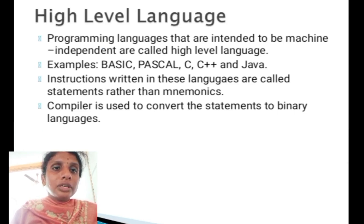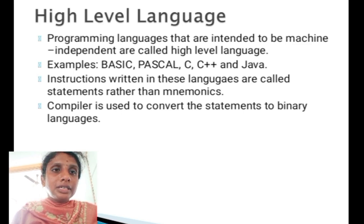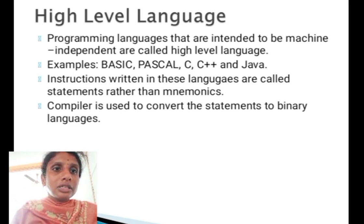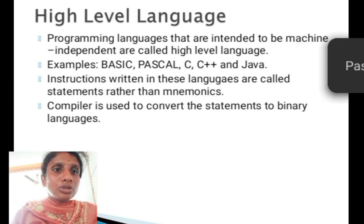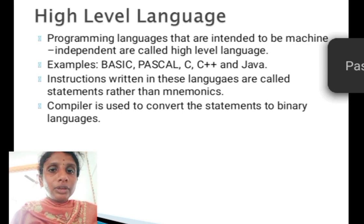A high-level language is a programming language designed to be machine-independent, for example BASIC, Pascal, C, C++, and Java. Instructions written in these languages are called statements rather than mnemonics. A compiler is used to convert statements into binary language.